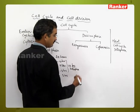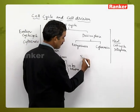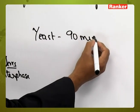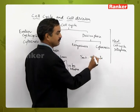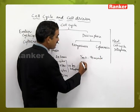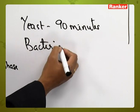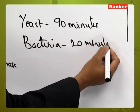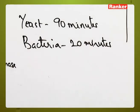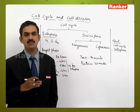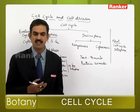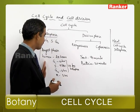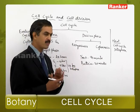In yeast, the entire cell cycle process is completed within 90 minutes. Whereas in some bacteria, the entire process is completed in about 18 to 20 minutes. The time taken for the cell cycle is different for different types of living organisms — 24 hours in human beings, 90 minutes in yeast, and 20 minutes in bacteria.